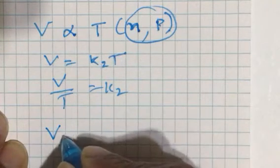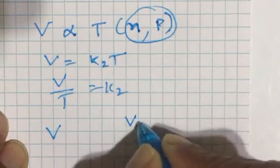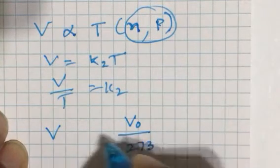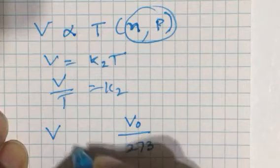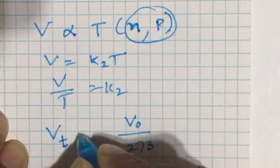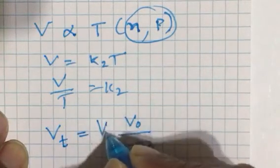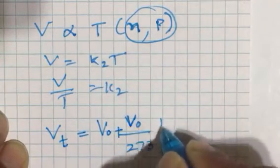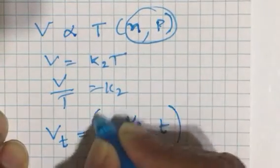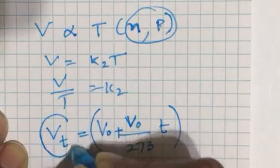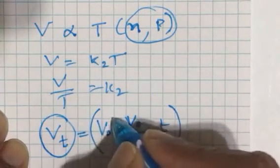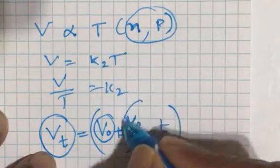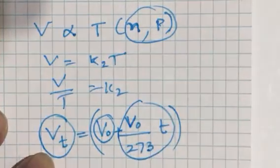Volume of a gas at T degree centigrade equals volume at 0 plus volume at 0 by 273 times T. It means volume of a gas at T degree centigrade is always greater than its volume at 0 degrees. It is more by an amount volume at 0 by 273 into T.